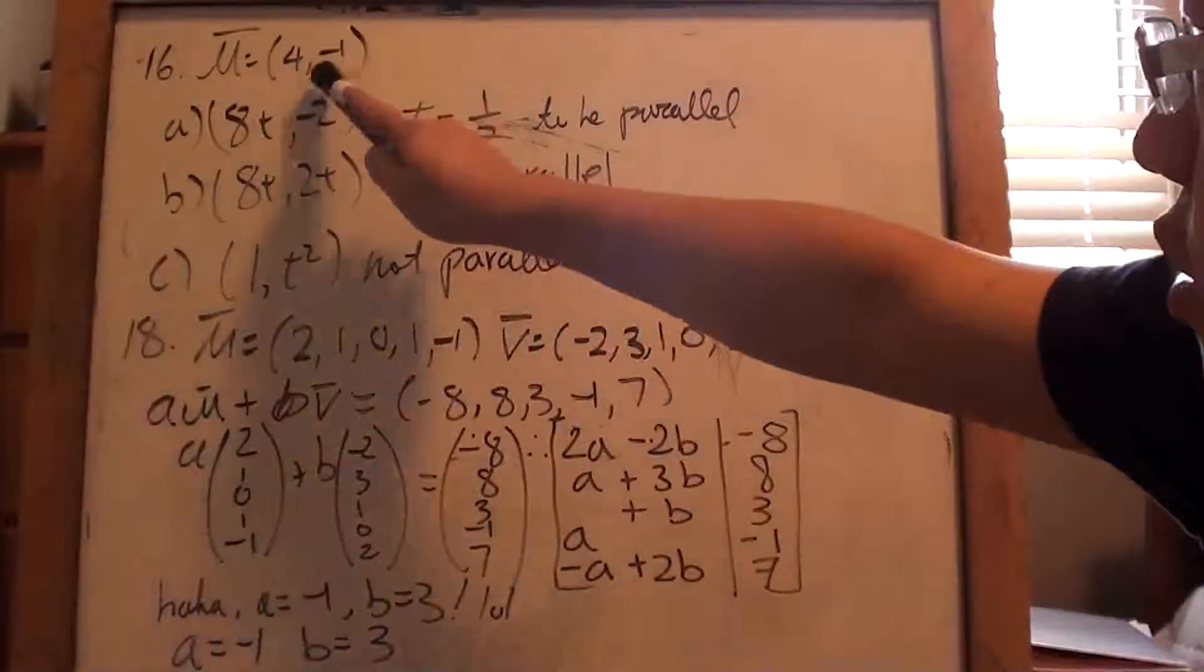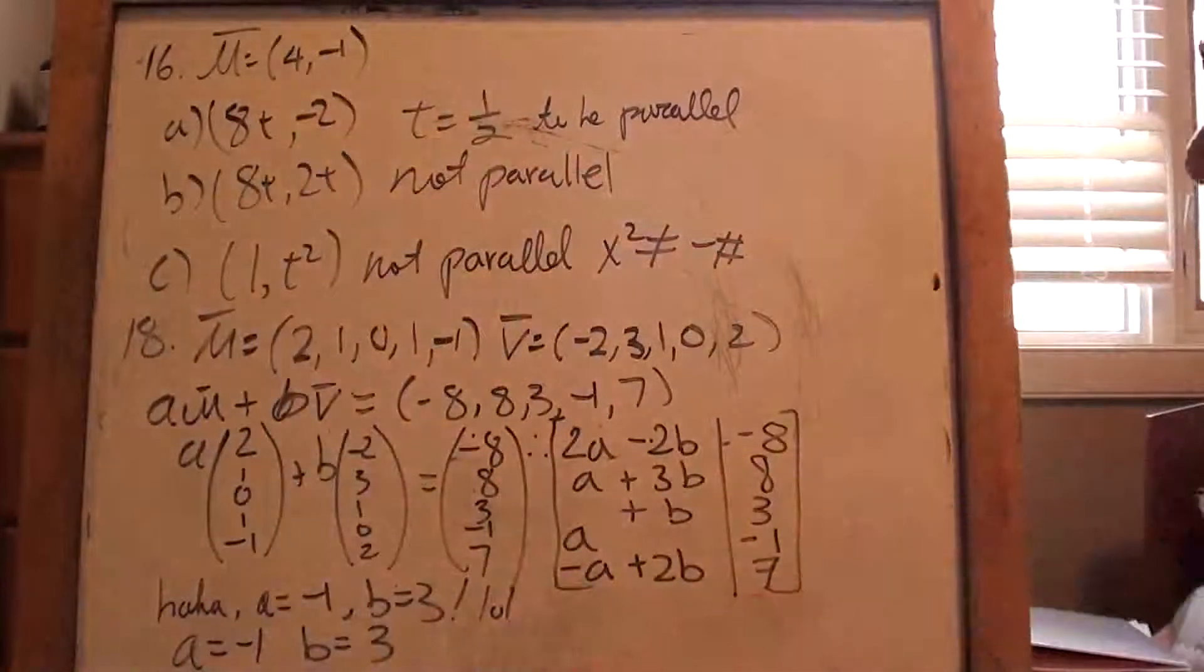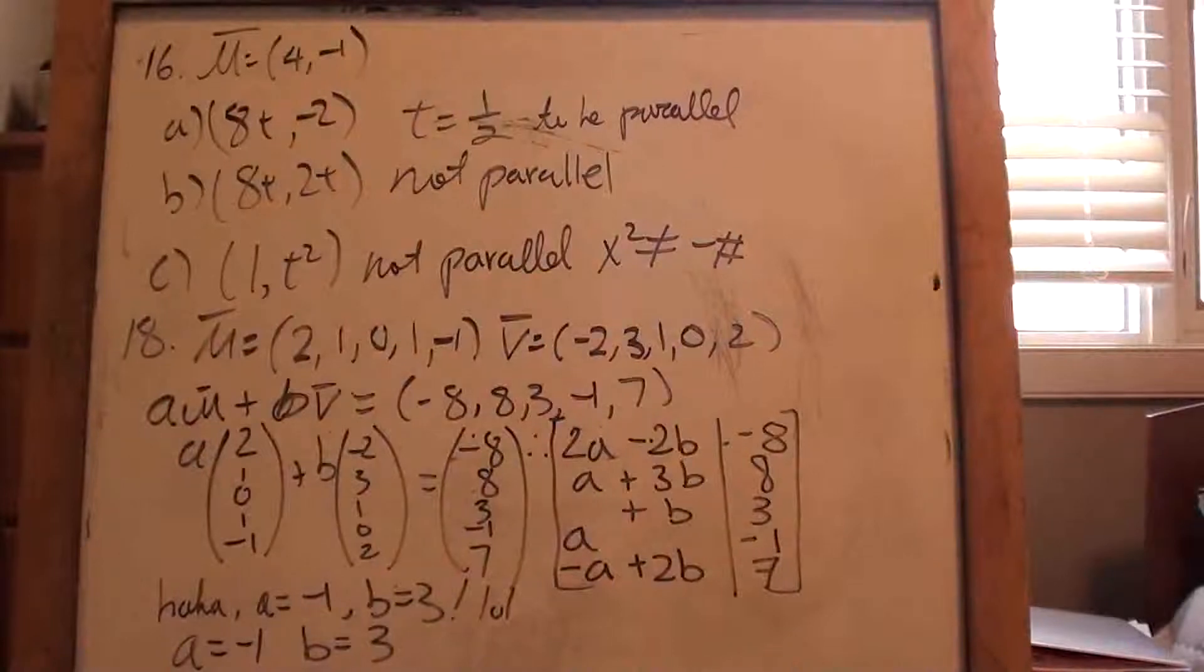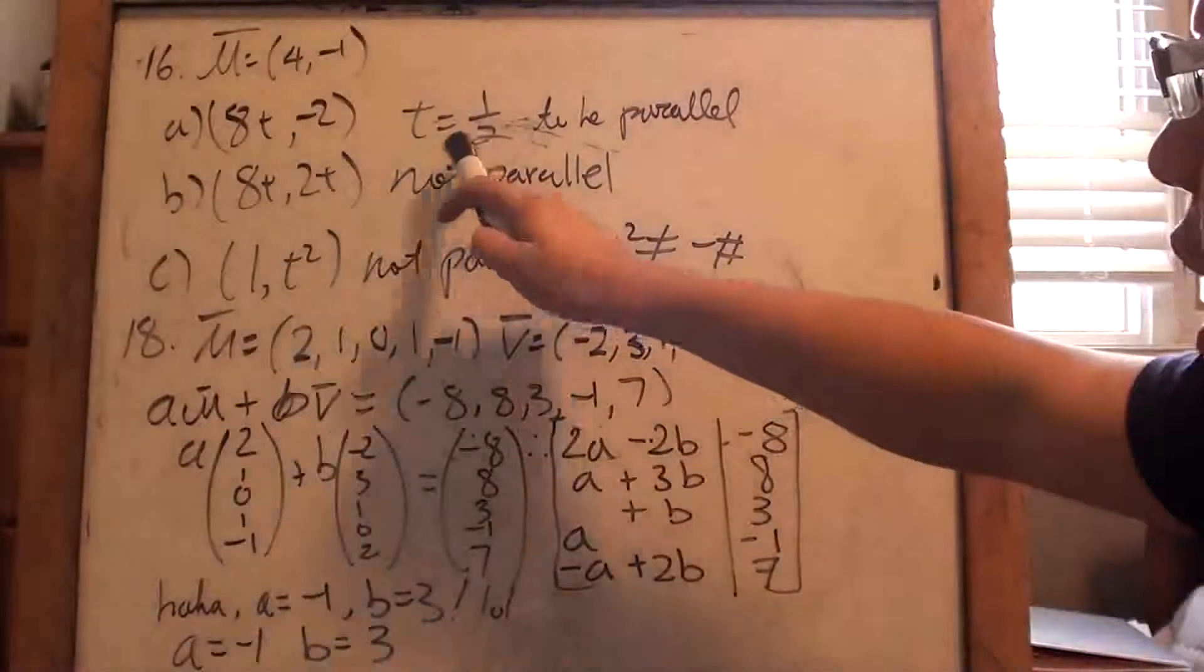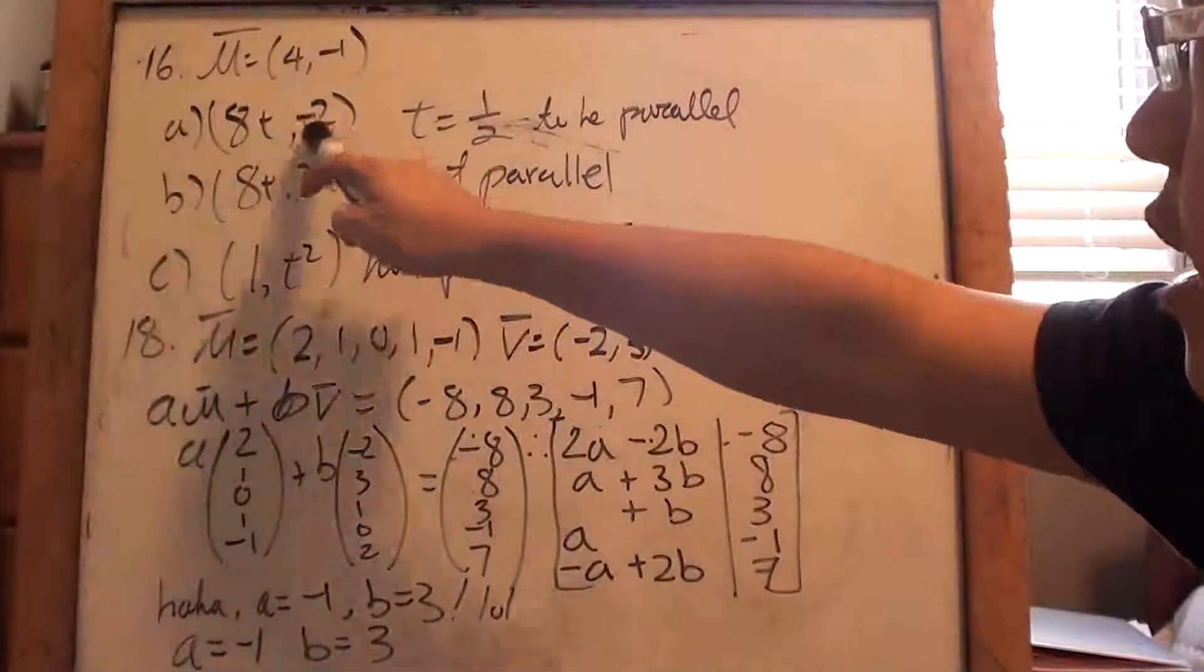So anyways, in order for these to be parallel, you need, you could say t equals 1 half, so that would be 4 and negative 2.